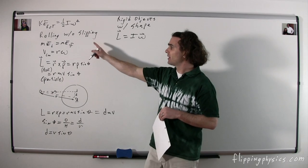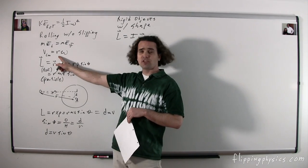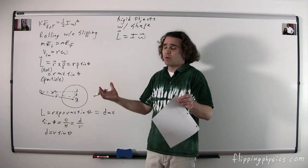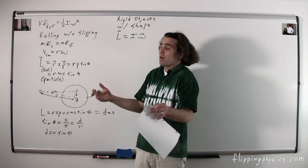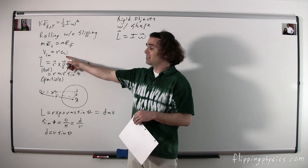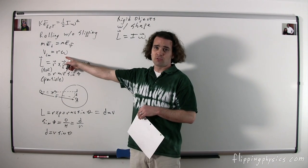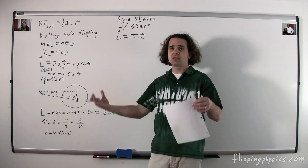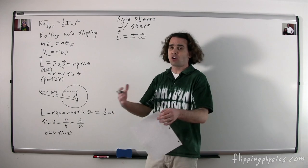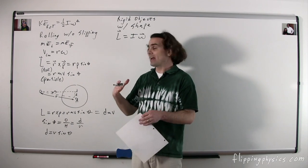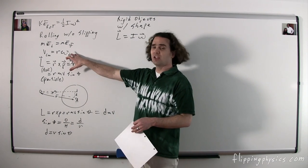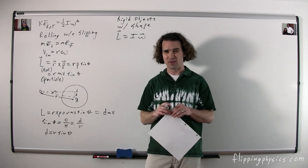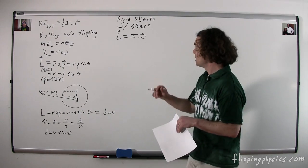Going back to rolling without slipping: v_cm = rω is the condition for rolling without slipping. When it is rolling with slipping, this condition is no longer true. So when asked when an object starts rolling without slipping, that's when the velocity of the center of mass equals the radius times the angular velocity.